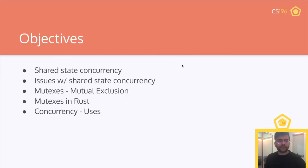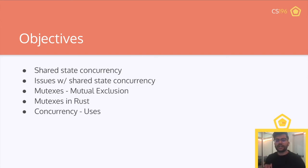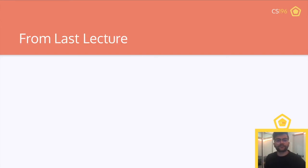So let's go over our objectives for today. Our objectives are to go over shared state concurrency, issues with shared state concurrency, mutexes — which stands for mutual exclusion — mutexes in Rust, and what we can use concurrency for beyond the scope of just these sort of toy experiments we're doing.